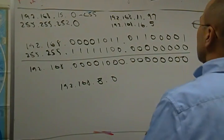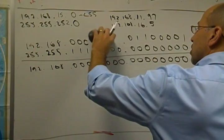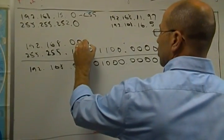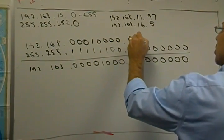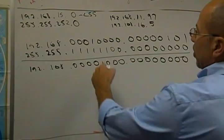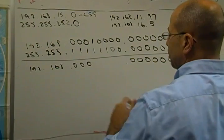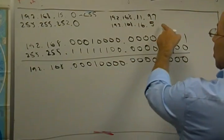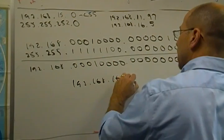All right, let's take 16. 16 actually looks like this. And we did 5. Looks something like that. So now when we do the ANDing process, we actually get something that looks like this. And these would be all zeros again. So 16.5 is actually on the 192.168.16.0 network.